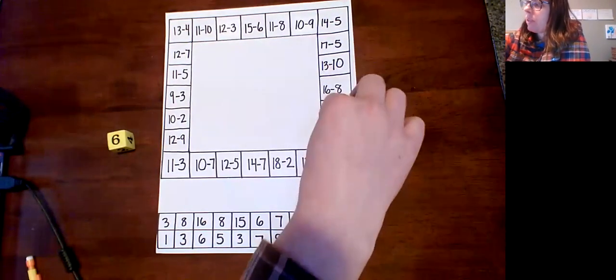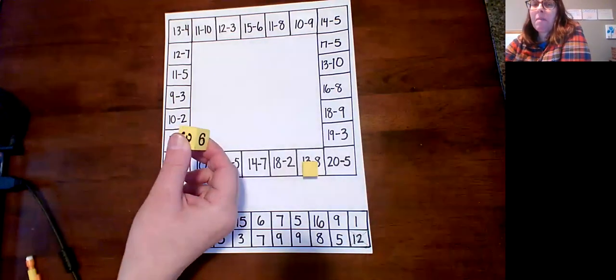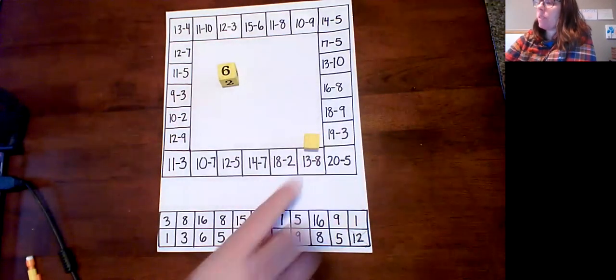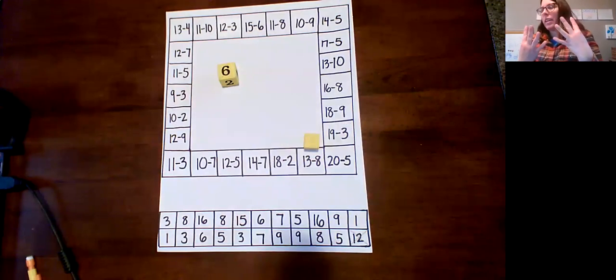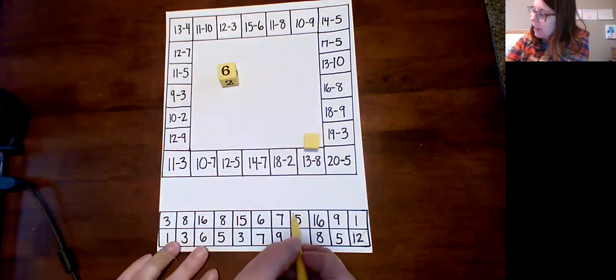Six, one two three four five six. Oh, and I don't know if I said it, it doesn't matter if your die is numbers or if your die has dots on it, either one will work just fine. 13 minus 8, so I have to put up eight fingers and count back from 13: 13, 12, 11, 10, 9, 8, 7, 6, 5. And then cross off a five.